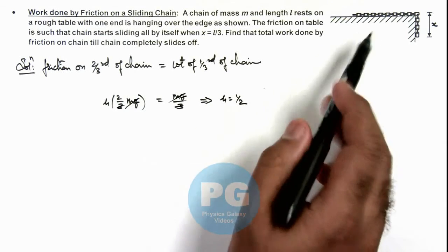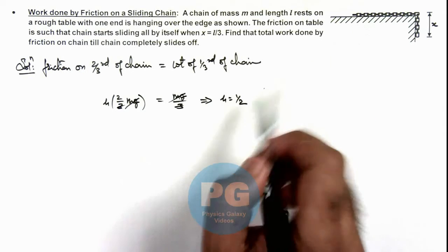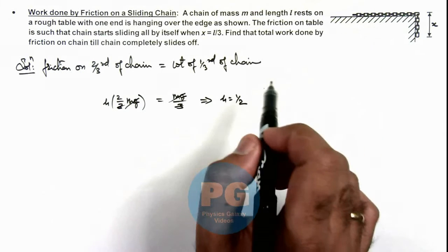This is the friction coefficient acting between chain and rough surface of the table.